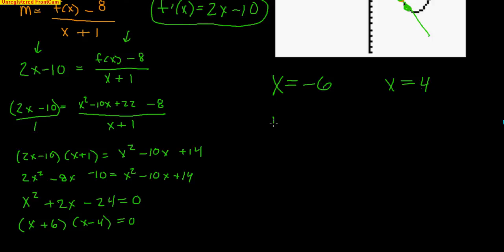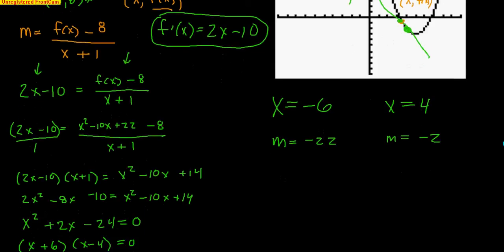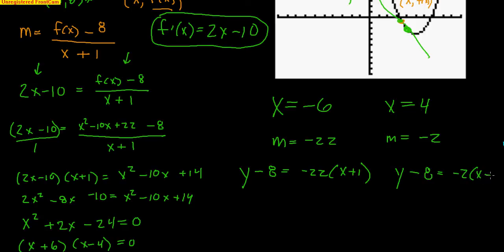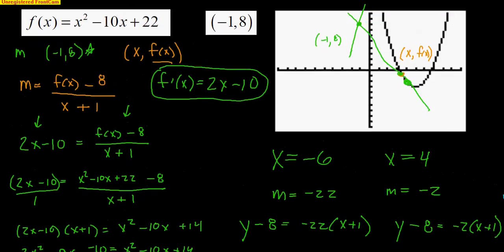To find the slopes, I plug each x value into the derivative f'(x) = 2x - 10. For x = -6: 2(-6) - 10 = -22. For x = 4: 2(4) - 10 = -2. Using the given point (-1, 8) with each slope, the two tangent line equations are: y - 8 = -22(x + 1) and y - 8 = -2(x + 1).